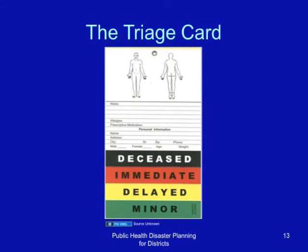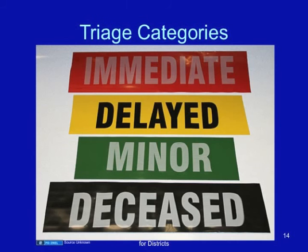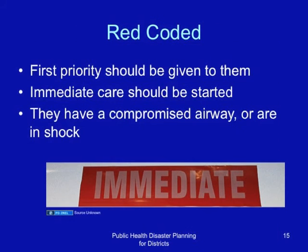Triage categories include those injured or affected persons that need immediate care, those that need delayed care, those that need minor care, and those that can be classified as deceased. The red coded are the first priority at the mass casualty incident site — immediate care should be given.